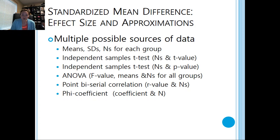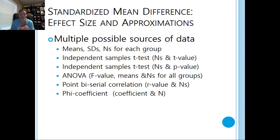Now let's look at how we calculate a standardized mean difference. We can use a variety of different data sources — there are actually around 30 different ways to calculate this effect size, because researchers present different data across studies. The most common sources are listed here. The fact of the matter is we just need the data, and we need to know we'll likely be pulling different types of data to get our summary effect size across studies.